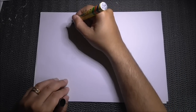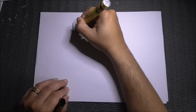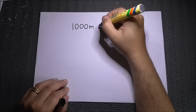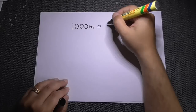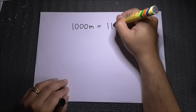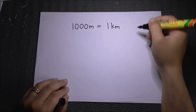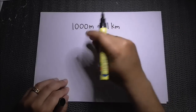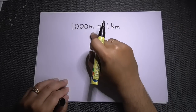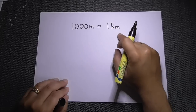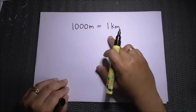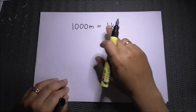First, you need to know that one thousand meters equals one kilometer. This means that meters is a smaller unit of measurement compared to kilometers. That's why the number one thousand becomes one — it becomes a smaller number when converted.